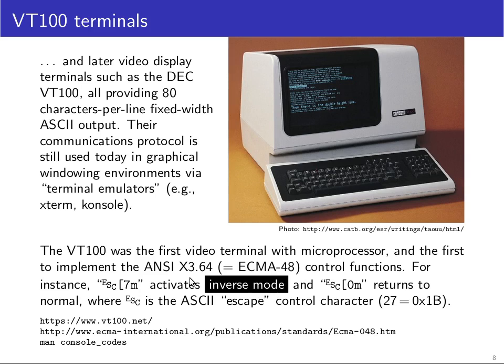These escape sequences allow a programmer to, for example, tell the terminal to clear the screen, change foreground and background color of the text being output, or position the cursor at arbitrary x and y coordinates. The escape character is ASCII code decimal 27 or hexadecimal 1B — this is also the code that pressing the escape key on the keyboard sends. The typical structure of these sequences is: an escape character, then an open square bracket, then a comma-separated sequence of numbers as parameters, and finally a single letter that is the actual command.